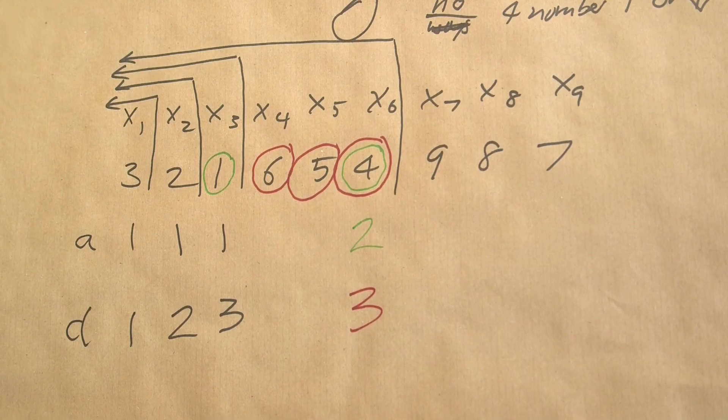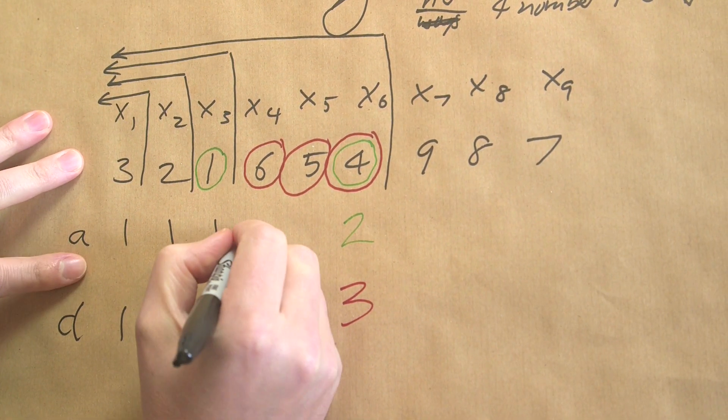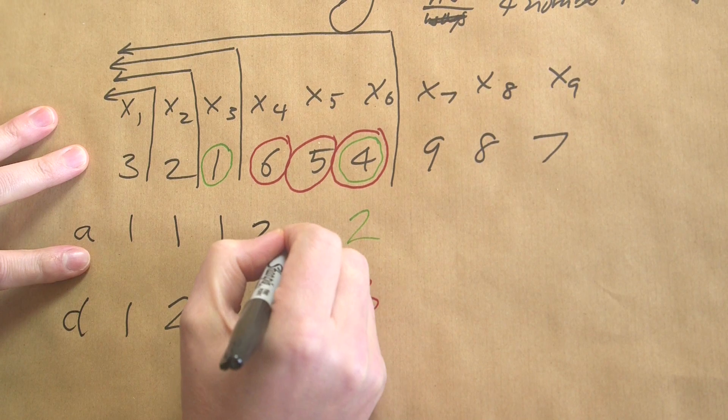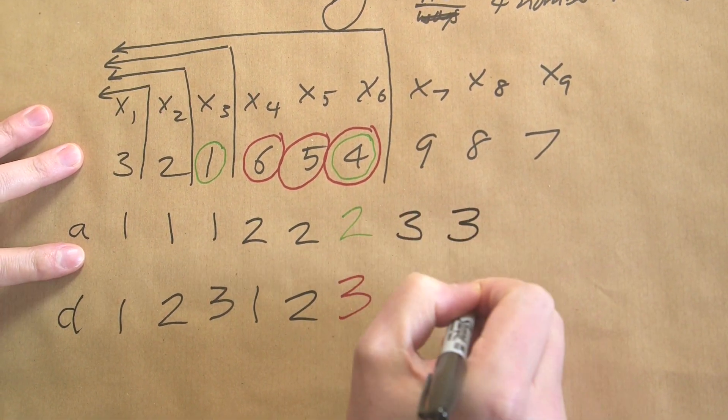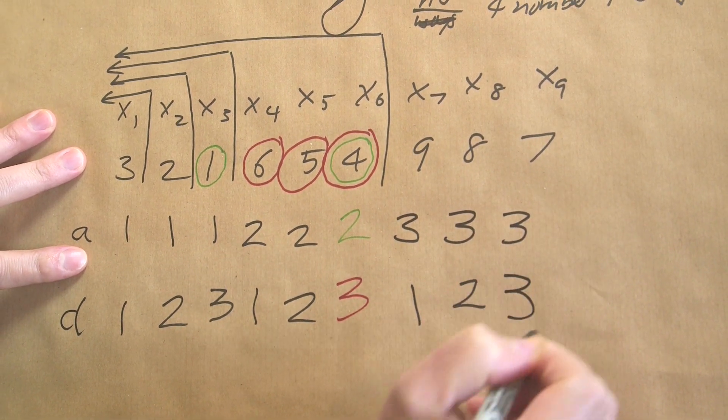Now I can continue filling this out. So this one is two, one, two, two, three, one, three, two, three, three.